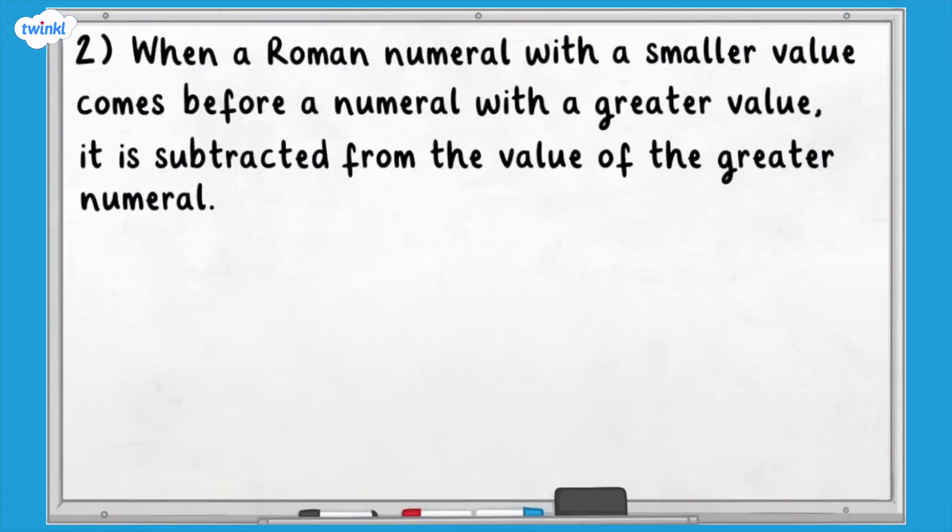Let's take a look at the next rule that we have to follow. When a Roman numeral with a smaller value comes before a numeral with a greater value, it is subtracted from the value of the greater numeral.